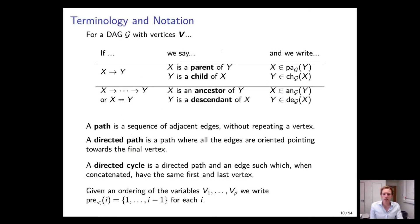Here's a slide you can come back to later. The key thing to know right now is that if we have one variable pointing to another — so X pointing to Y — we say that X is a parent of Y. We denote the set of parents of Y by PA(Y). That's the only notation I'm asking you to absorb right now.